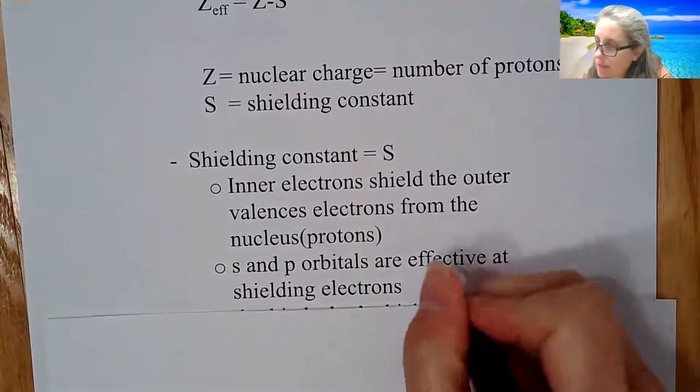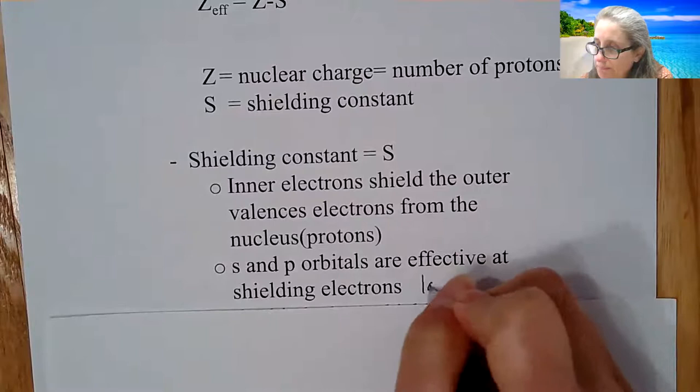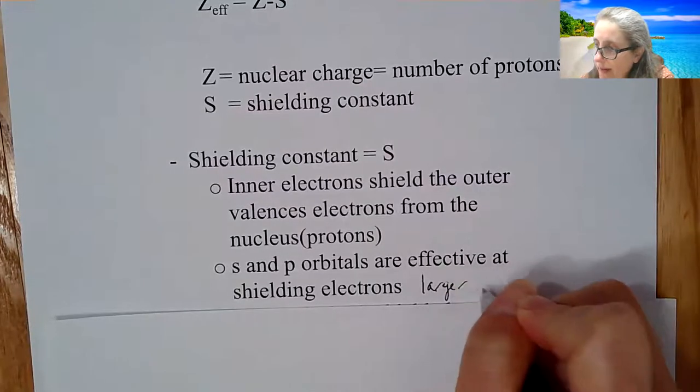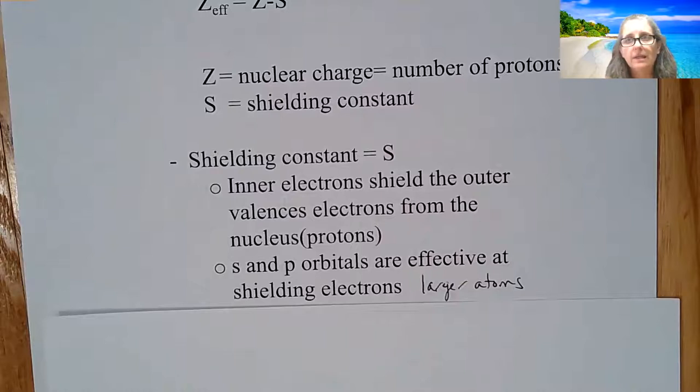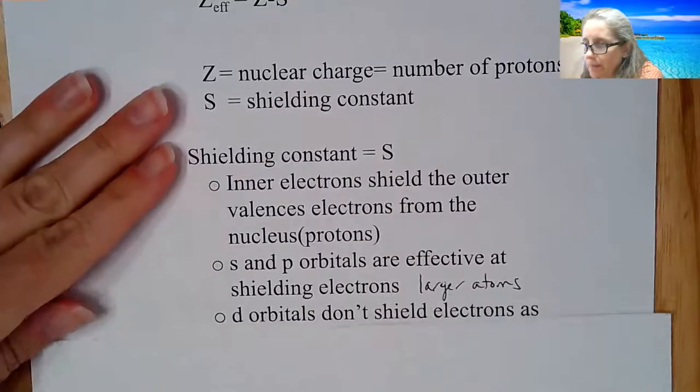So that means you tend to have what we call larger atoms if you have a good shielding effect. Because again, the shielding prevents the electrons from feeling those protons. So it doesn't get cinched in. And a good thing that your book mentions is it's kind of like a lampshade. So again, the more lampshades you have, the less light that comes through.